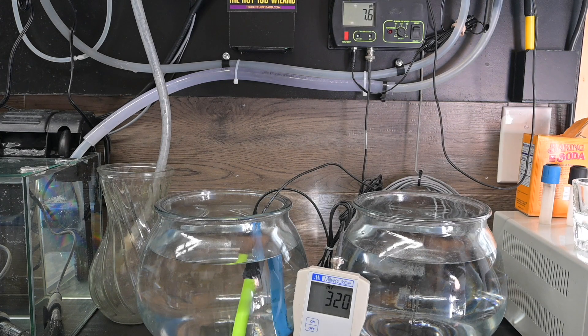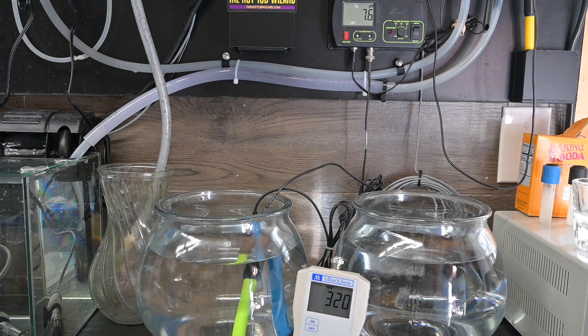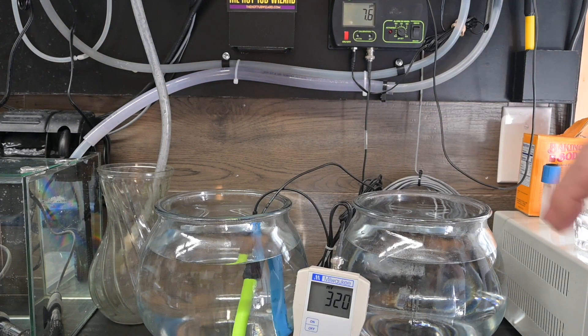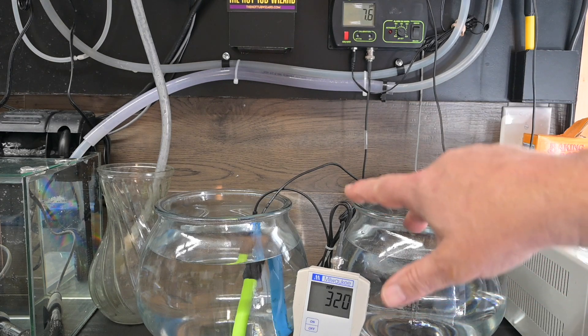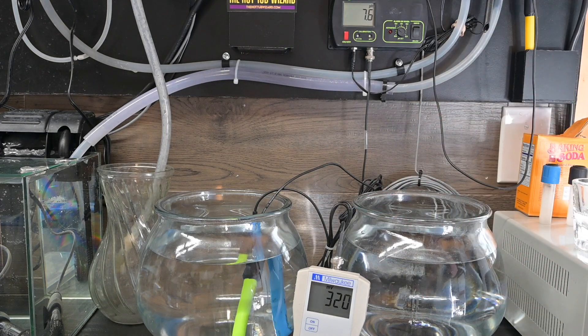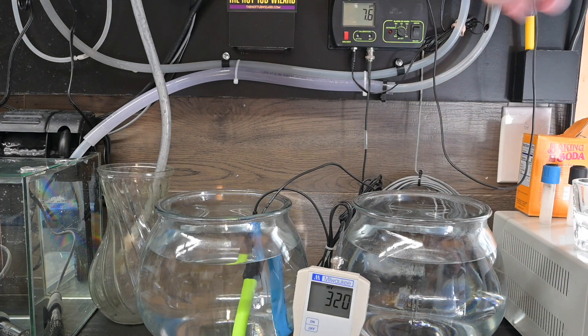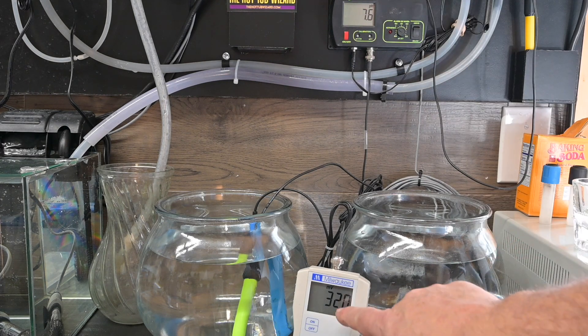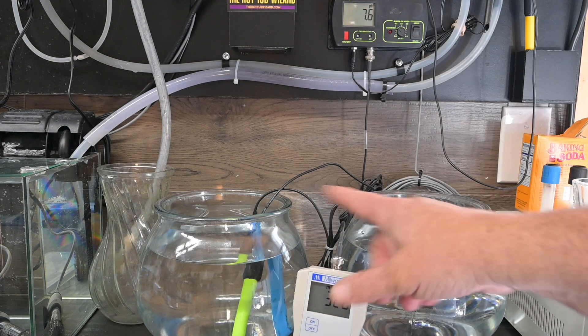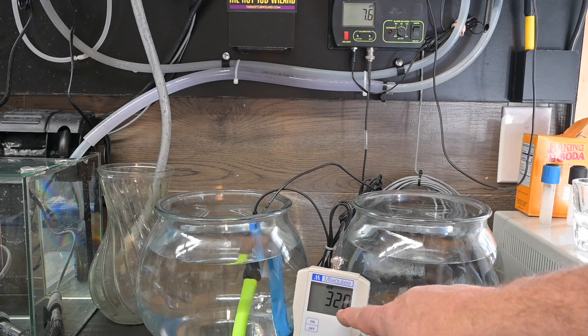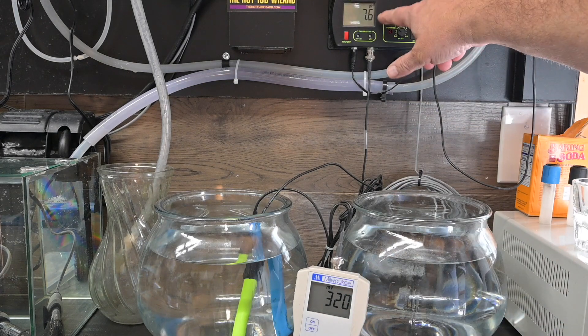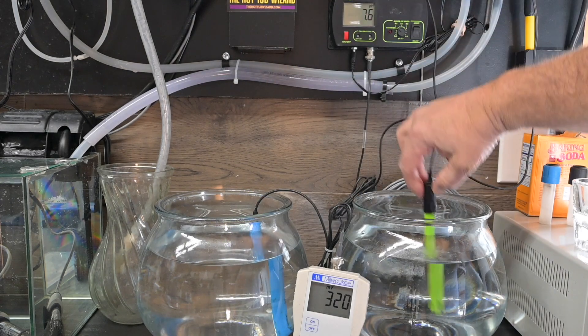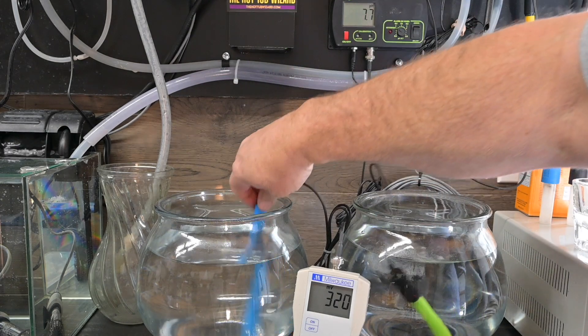Okay, for our demonstration here we're going to start with a reference. We have two bowls of water that are about as identical as we can get. If you see on our ORP meter here, these are untreated - 320 millivolts, 7.6 pH.